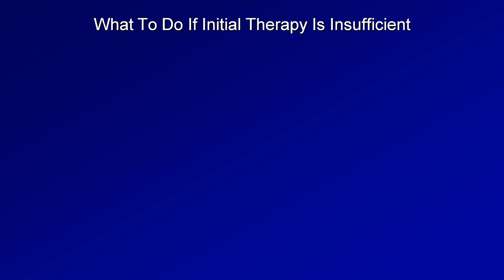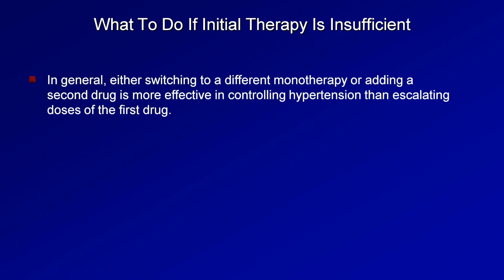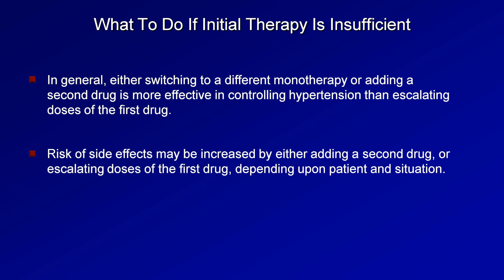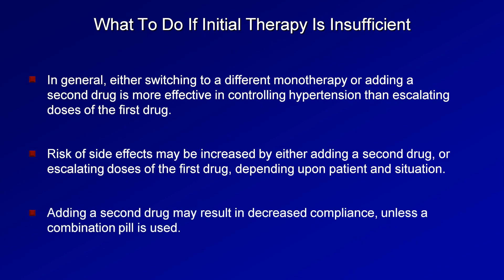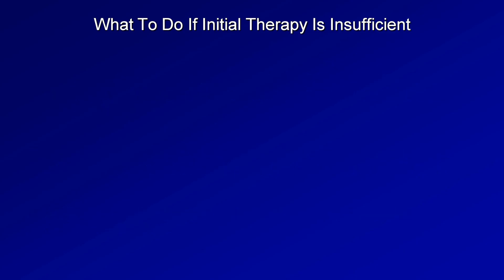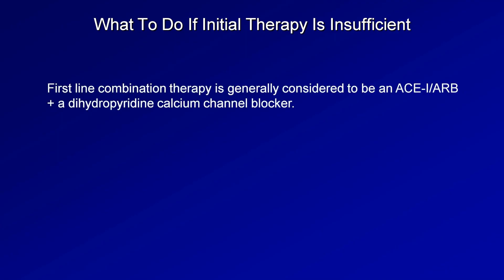Inevitably, all clinicians will face the question of what to do if initial therapy is insufficient. In general, either switching to a different monotherapy or adding a second drug is more effective than escalating doses of the first drug. The risk of side effects may be increased by either approach depending on the patient and situation, and adding a second drug may result in decreased compliance unless a combination pill is used. If combination therapy is chosen, the first-line combination is generally considered to be either an ACE inhibitor or ARB plus a dihydropyridine calcium channel blocker — for example, the combination of benazepril and amlodipine.